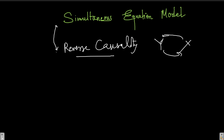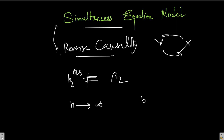Reverse causality is something that is often present in simultaneous equation models, and we are going to see what a simultaneous equation model is and how reverse causality is present in it. If we have reverse causality, we will have a b2_OLS which is a biased estimator of beta_2. The other problem is inconsistency — meaning that as n tends to infinity, b2_OLS does not converge to beta_2.